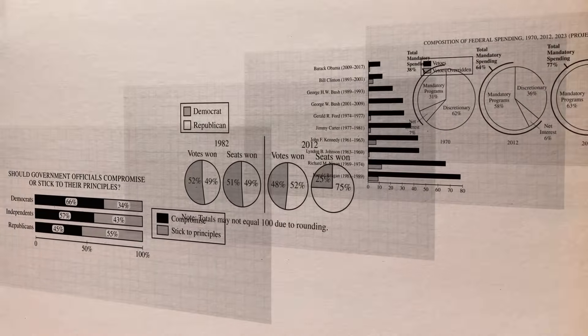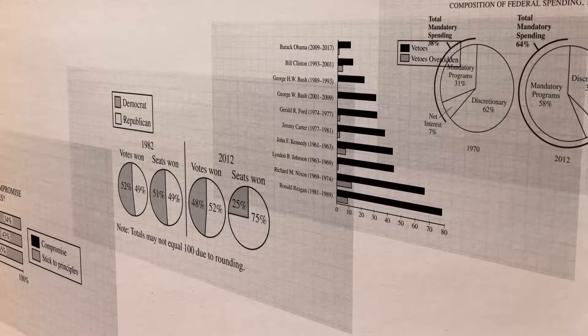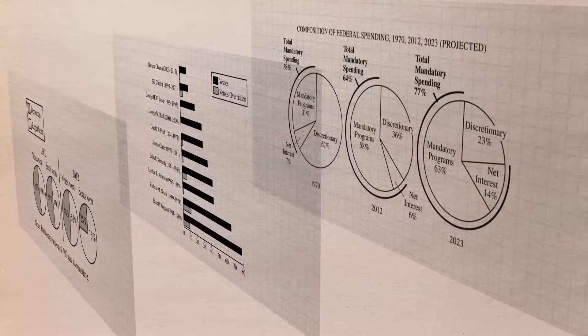In the quantitative data FRQ, they're going to present you with a visual stimulus which will be in the form of a graph, a chart, a map, or some other representation of numbers. Your job is to interpret those numbers and answer the four prompts that they give you. And just between you and me, this is probably the easiest of the three FRQs.